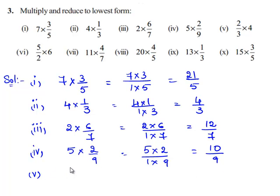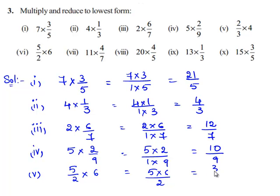Now let us move on to the fifth bit: 5 by 2 multiplied by 6. Let us multiply the numerators and denominators respectively. So 5 times 6 divided by 2 gives 30 divided by 2. Since 2 goes into 30 fifteen times, the product of 5 by 2 times 6 is 15.